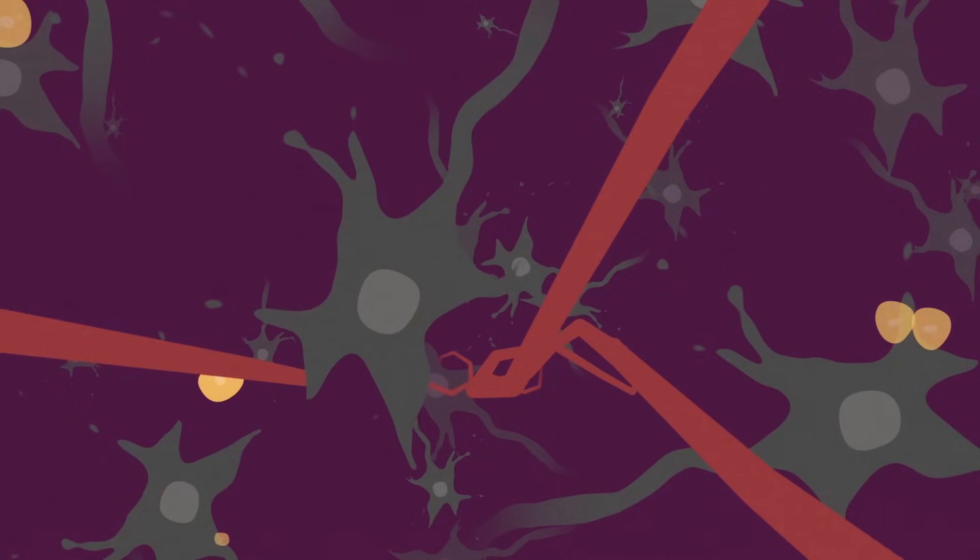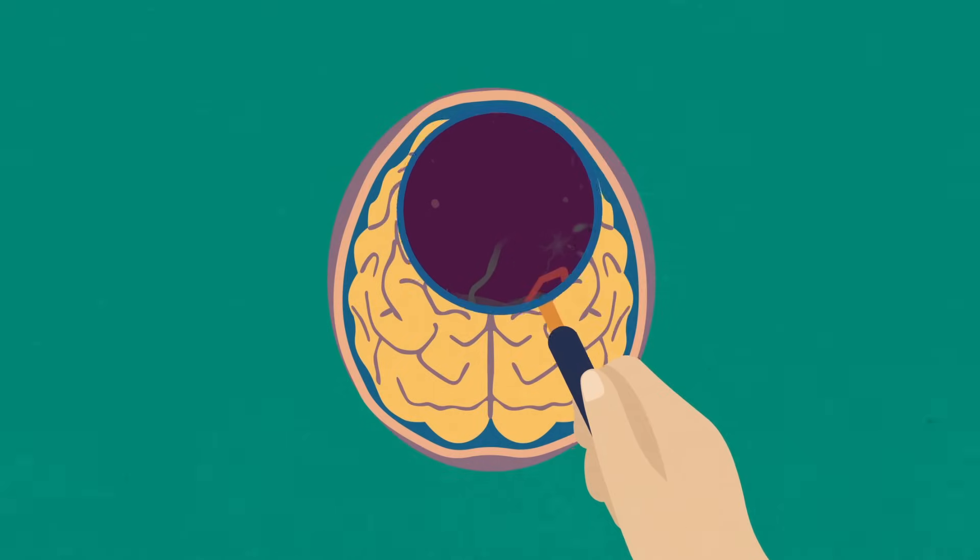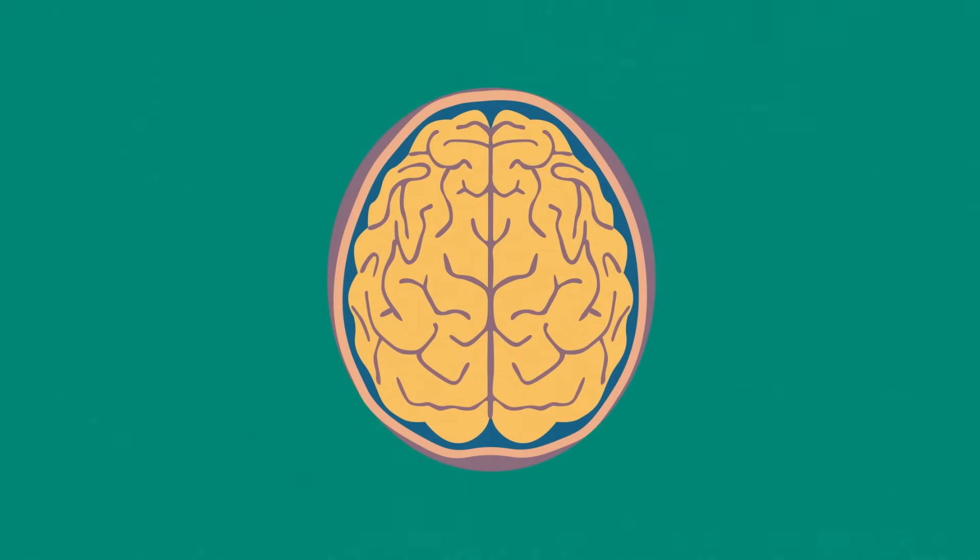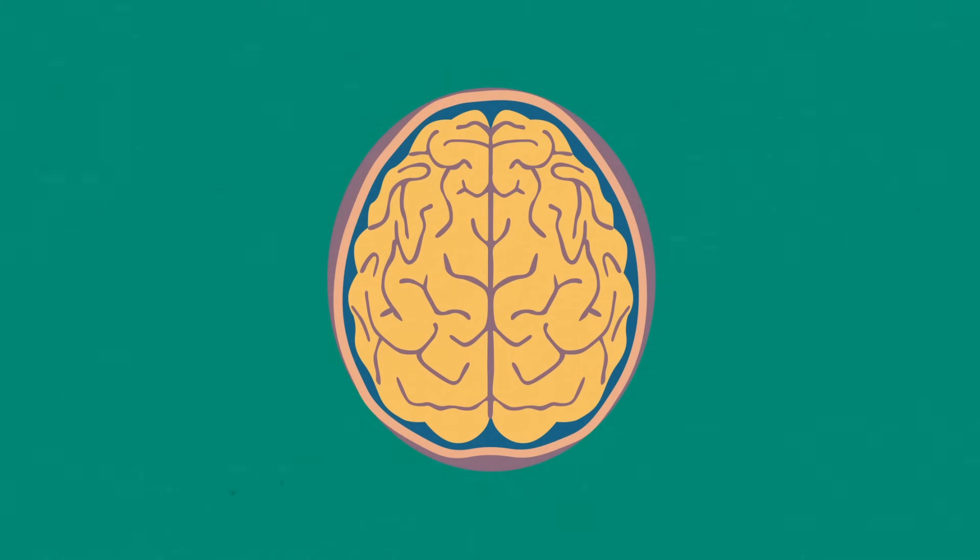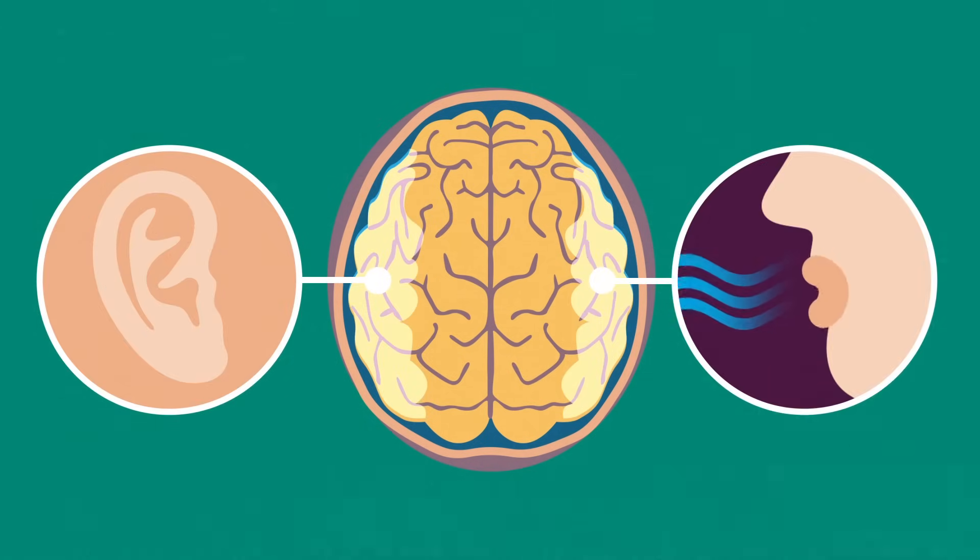The area of the brain where this damage occurs determines the symptoms a person experiences. If nerve cells in the back of the brain are damaged, a person's vision might be affected and they may have trouble reading words or climbing stairs. If nerve cells in the side of the brain are damaged, communication and language skills can change.